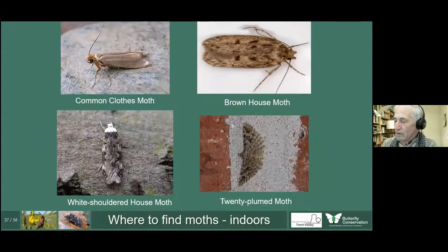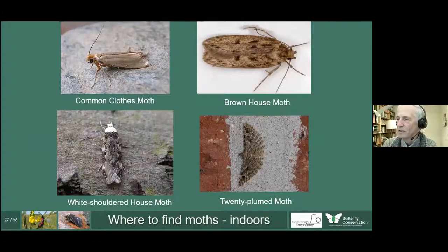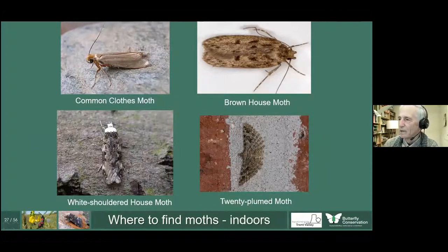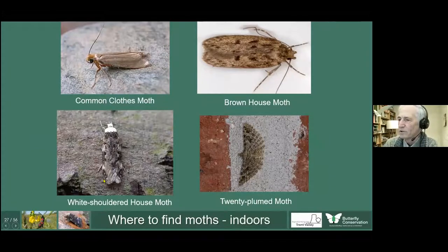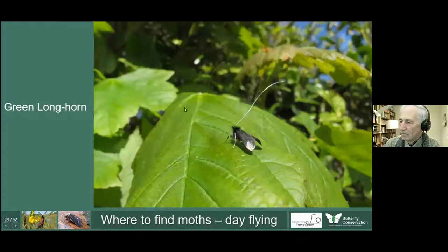Where do we find moths ourselves? We can find moths indoors — including the Common Clothes Moth. Most people think moths are dirty and brown and feed on clothes, but only a few species do, and then only as caterpillars. The Common Clothes Moth is not that common these days since we started using artificial fibres. The Brown House Moth and White-shouldered House Moth are often found in houses, feeding on household detritus. The Twenty-plume Moth is quite often found on walls indoors and feeds on honeysuckle.